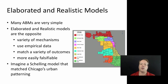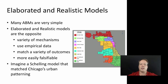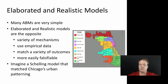You could imagine, for instance, a Schelling model aimed at matching Chicago's urban patterning — showing how over time people decided to live in different parts of the city. As opposed to the basic Schelling model, which is a very simple idealistic model, you might have things like public transportation thrown in, other factors not in the original Schelling model, empirical data like census data over time, and the ability to match a variety of outcomes like future development patterns.